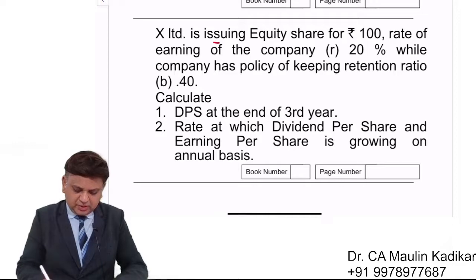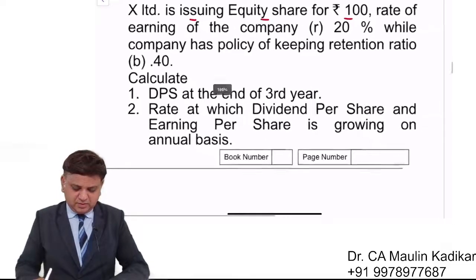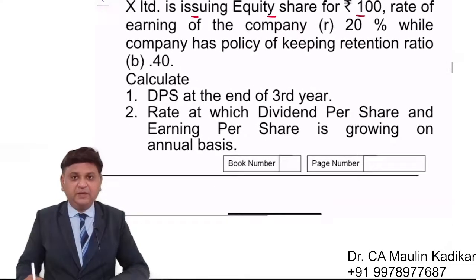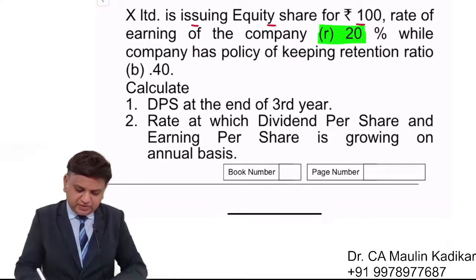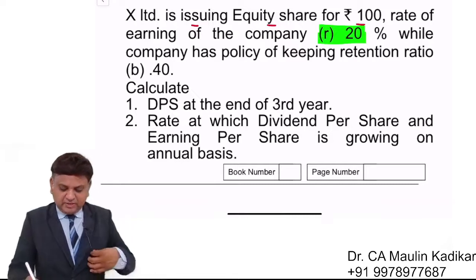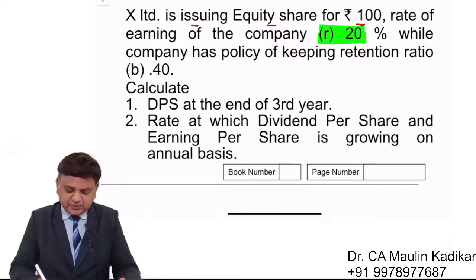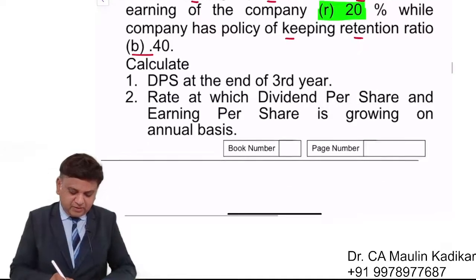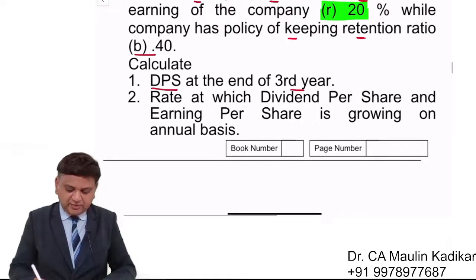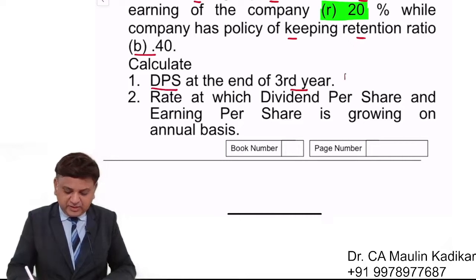X Limited is issuing equity shares for Rs.100. The rate of earning of the company is 20%, so R is 20%. When the company has a policy of keeping a retention ratio of 0.40, calculate the dividend portion at the end of the third year. So we are required to calculate D3.